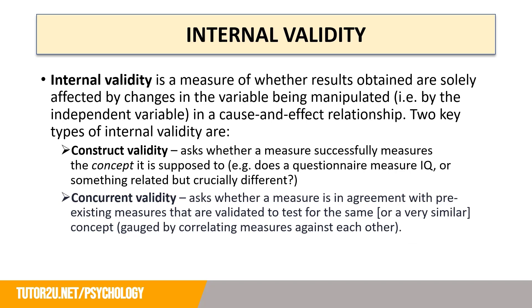Internal validity is a measure of whether results obtained are solely affected by changes in the variable being manipulated, i.e. by the independent variable, in a cause and effect relationship. Two key types of internal validity are construct validity, which asks whether a measure successfully measures the concept it's supposed to — for example, does a questionnaire measure IQ or something related but officially different? The other type is concurrent validity, which asks whether a measure is in agreement with pre-existing measures validated to test for the same or very similar concept, and this is gauged by correlating measures against each other.